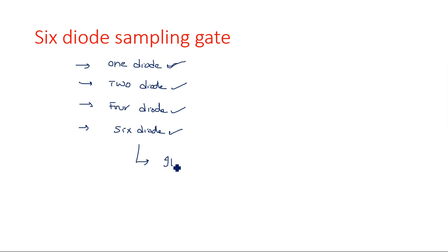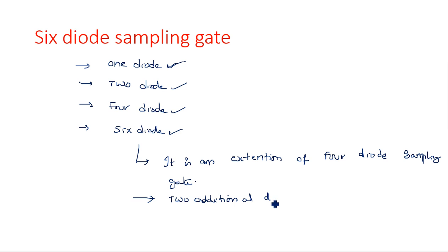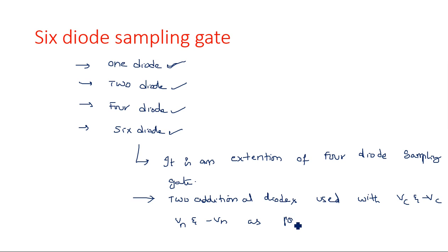The six diode sampling gate is an extension of the four diode sampling gate. The same circuit is considered but with two additional diodes connected with power supplies VC and VN, so we apply plus VC, minus VC, plus VN, and minus VN as power supply voltages.